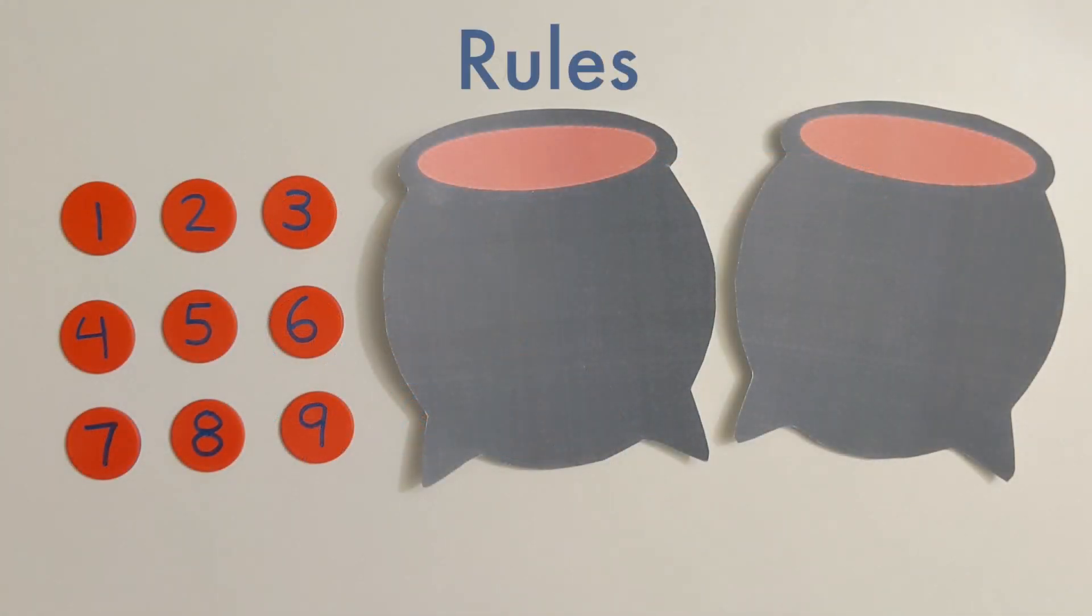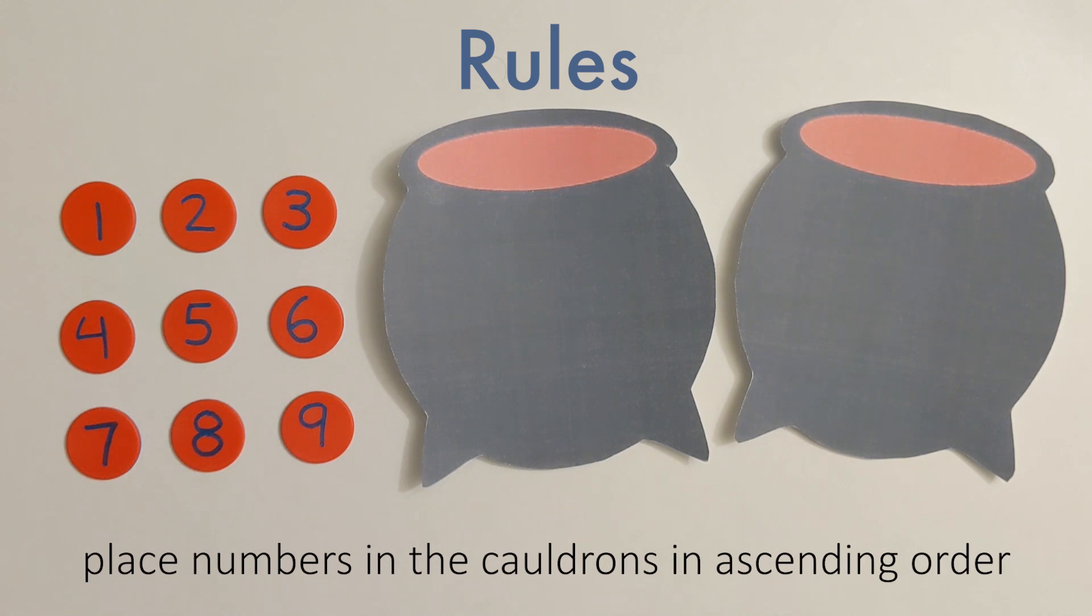Let's go over the rules. Starting with the number 1, we want to place our numbers in either cauldron in ascending order, and we can't skip any numbers.